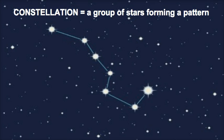Have you ever looked up at the night sky and seen the Big Dipper? The Big Dipper is a constellation. A constellation is a group of stars that form a pattern.